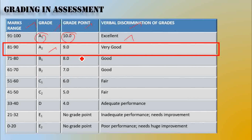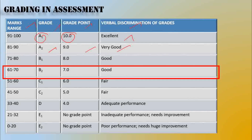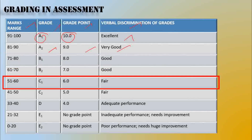If you score 91 and above, the grade will be A1, the grade point will be 10, and verbally we say it as 'Excellent.' Next, 81 to 90 — the grade will be A2, grade point will be 9, and that is 'Very Good.' Then 71 to 80 is B1, and 61 to 70 is B2, which is 'Good.' C1 is 51 to 60.